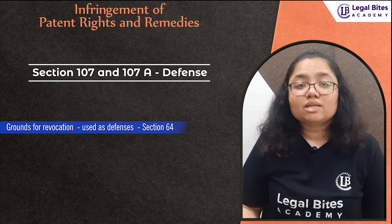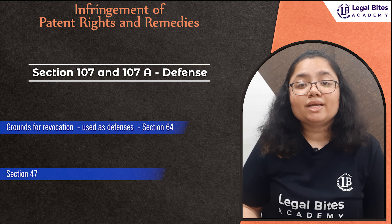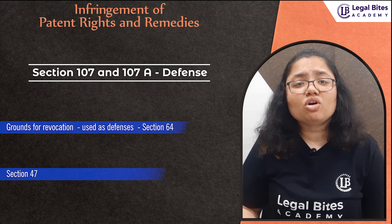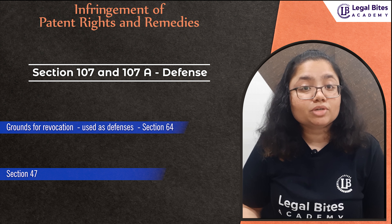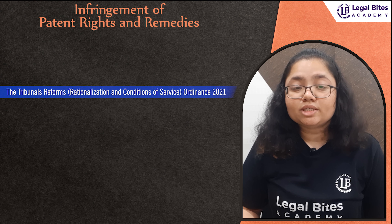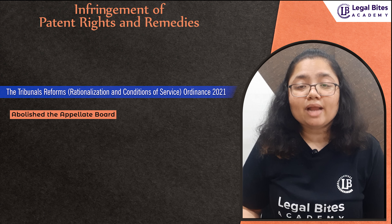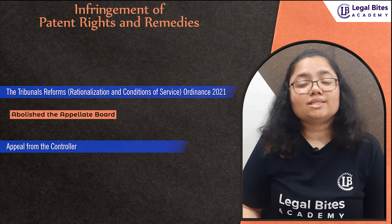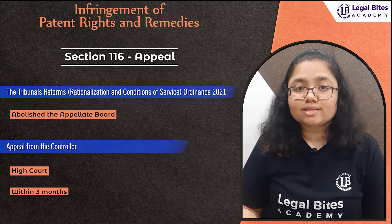It is also a defense that such acts fall within the meaning of Section 47 of the Act — acts done by the government or on its behalf, for its own use, if published in the official gazette, or if the acts are done for experimenting, research or education. The Tribunals Reforms, Rationalization and Conditions of Service Ordinance 2021 abolished the Appellate Board under the Act, as well as under the Trademarks Act of 1999. So, the appeal from the controller lies in the High Court, which is to be made within three months from the date of such decision as per Section 116.